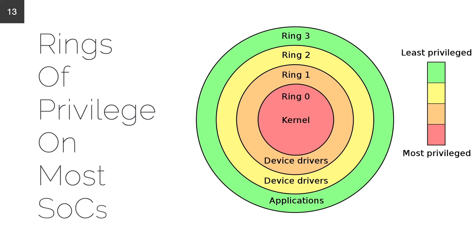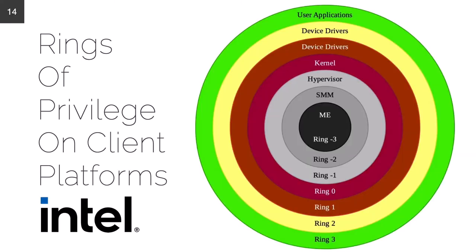This is the classic picture of the rings of privilege on most SOCs and processors. Historically, ring three was the least privileged level where user applications ran, rings two and one were more privileged for device drivers with hardware access, and ring zero was where the kernel ran at the most privileged level. In a modern Intel client architecture, there are additional rings for the hypervisor, SMM, and the management engine. System management mode on ring negative two is a good precursor to the TEE, where memory was secured and only highly privileged operations were permitted.